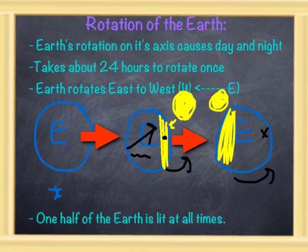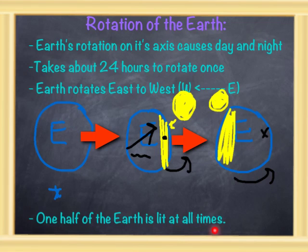Now it's important to know what's actually moving in this picture — the Sun or the Earth? You guys decide. And the last thing is that one half of the Earth is lit at all times. When we go outside to go to our lab, we're going to be able to see what I'm talking about and the rotations in this picture. We'll be able to see that outside.